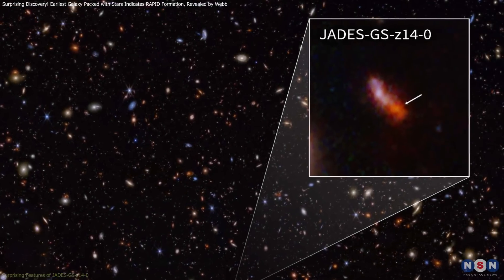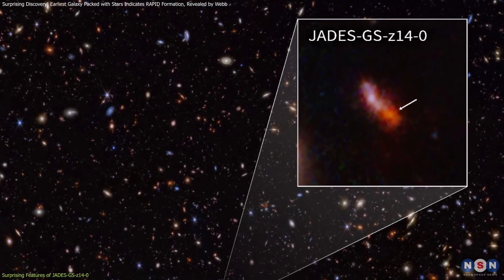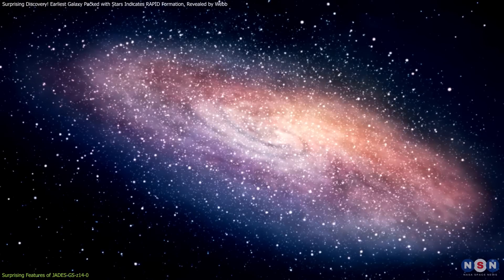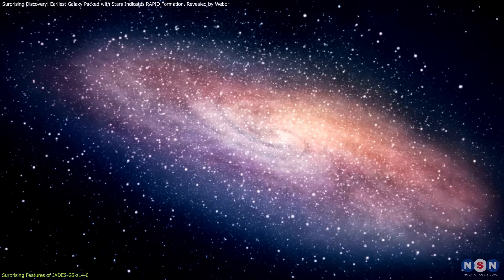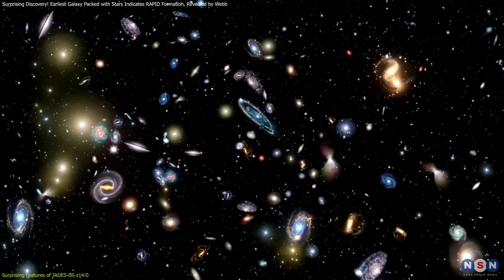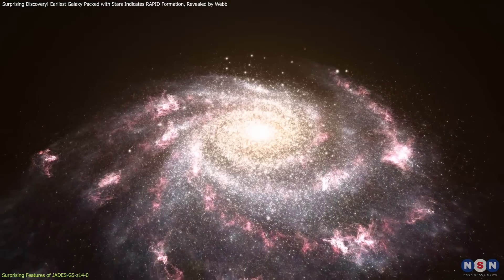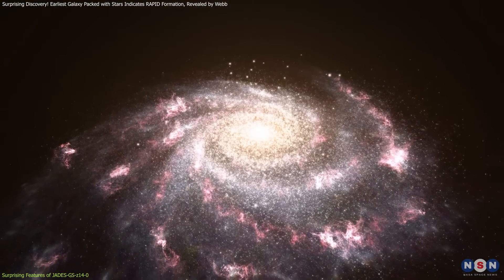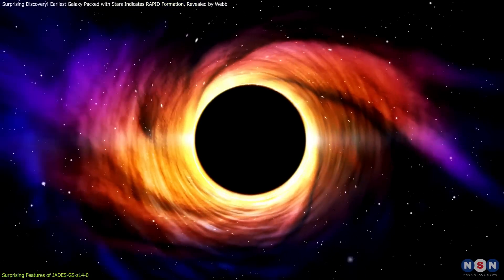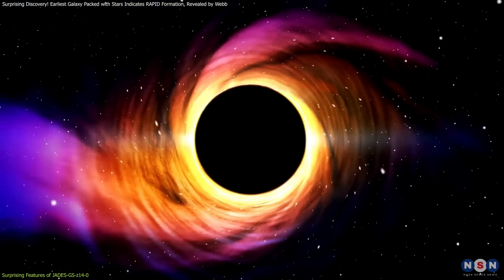One of the most surprising aspects of the JADES 14-0 galaxy is its size and brightness. Although it's one of the oldest galaxies we know, spanning over 1,600 light-years across, it shines as brightly as much younger galaxies. This intense brightness comes from a large number of young stars, rather than from matter falling into a supermassive black hole, which is common in many bright galaxies.